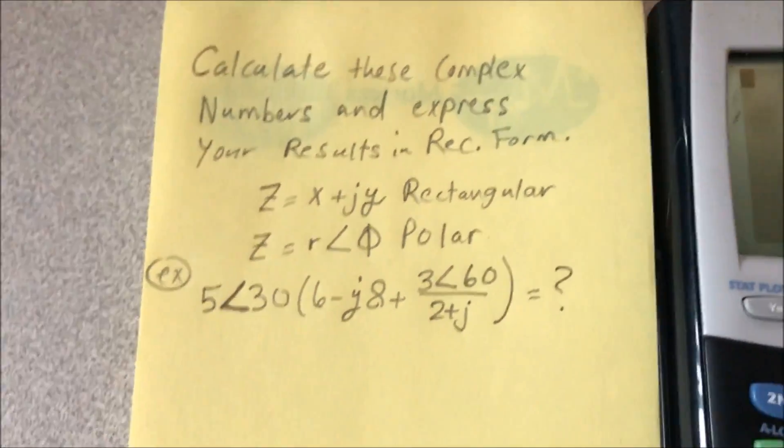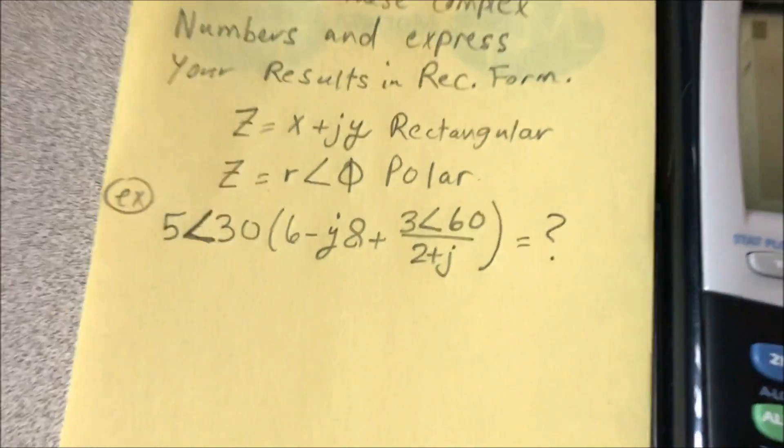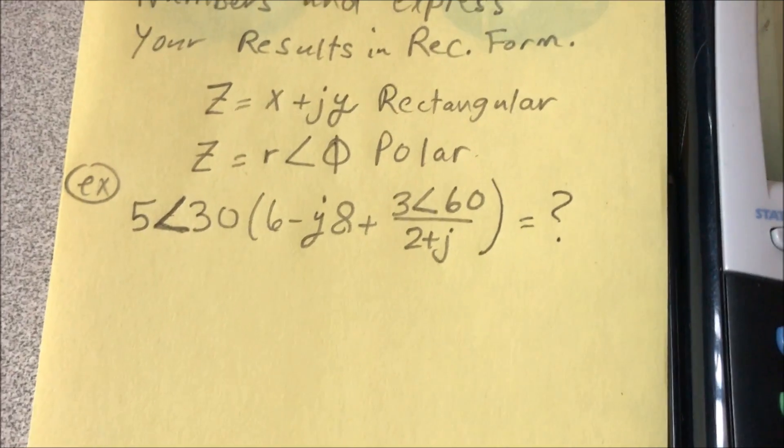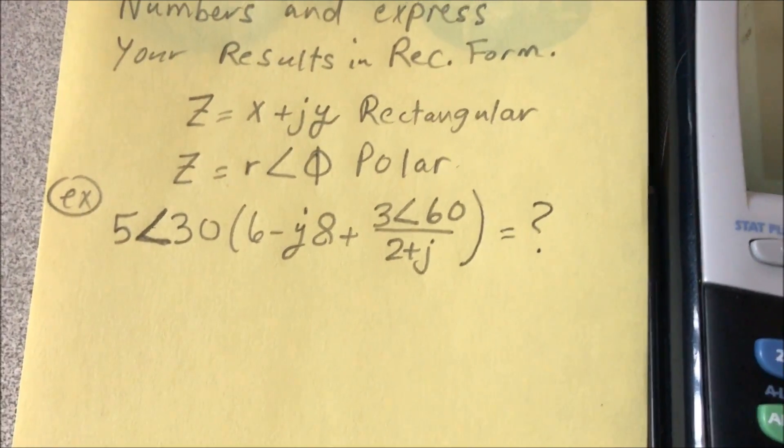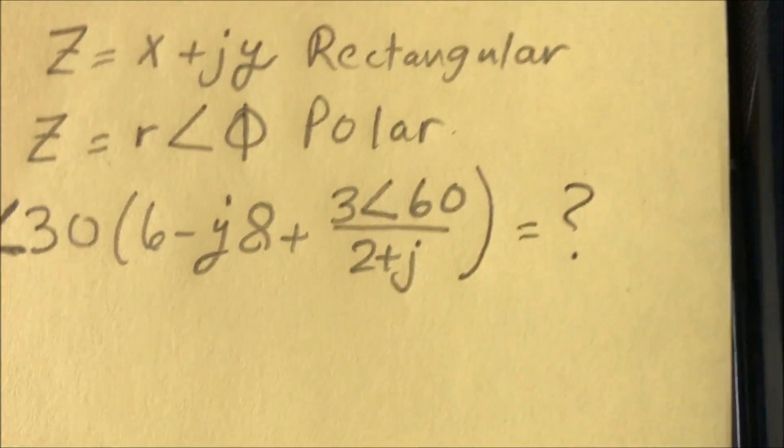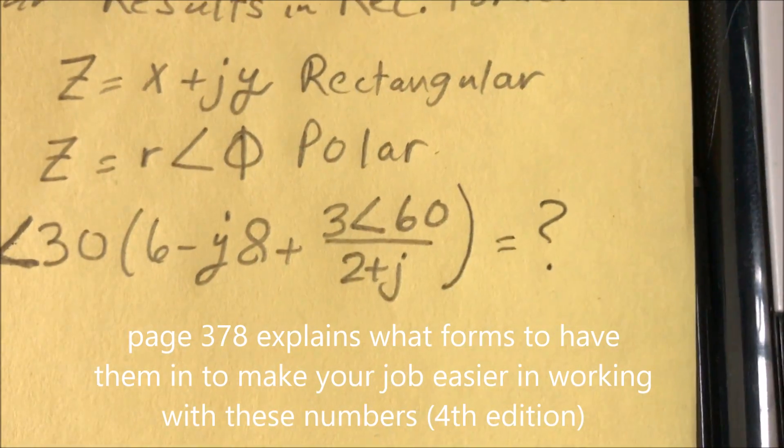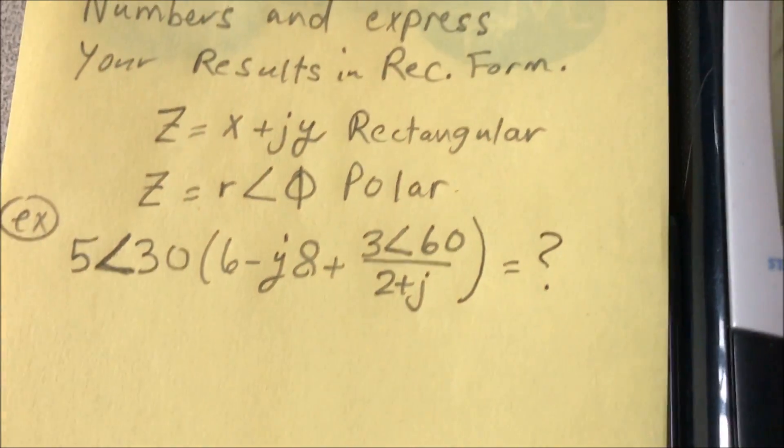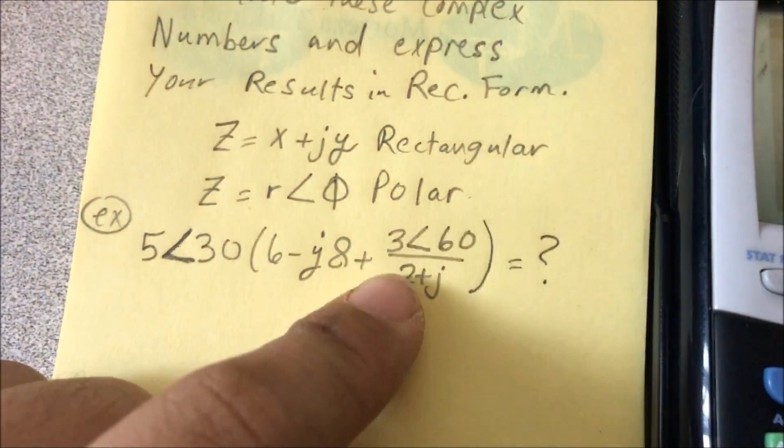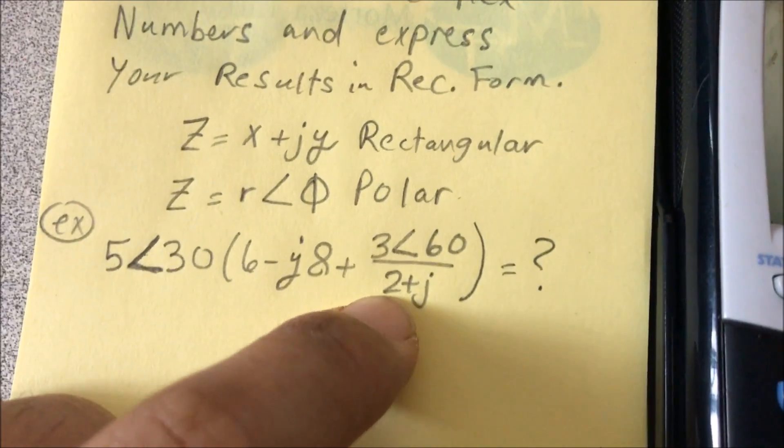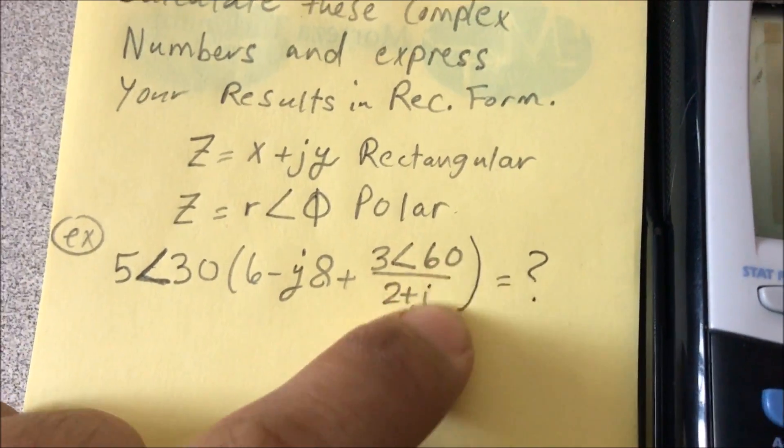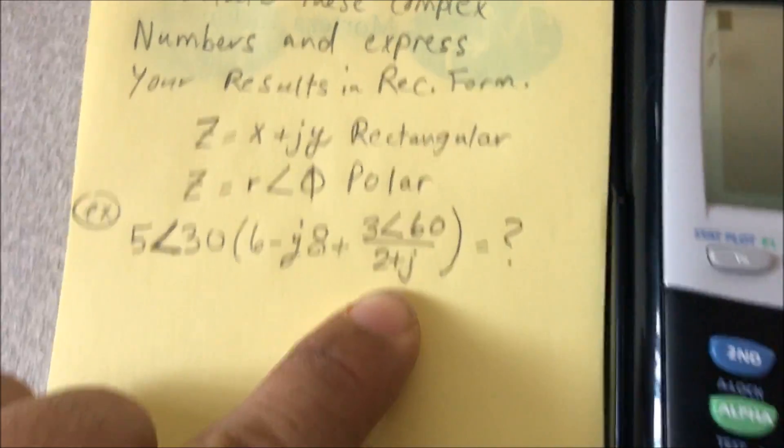Now this is the example: 5∠36° minus j8 + 3∠60° divided by 2 plus j. We're going to look at this end part. We're going to try to convert this 2 plus j into polar, because for division it's easier to just convert that into polar. That way the coefficients just divide and the angles just subtract from one another.